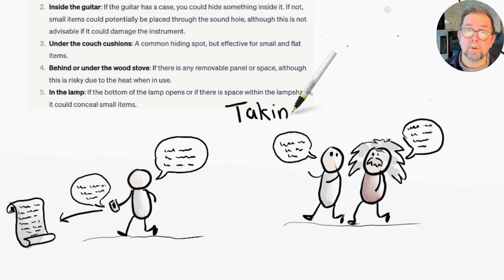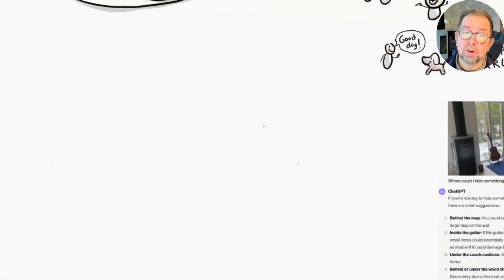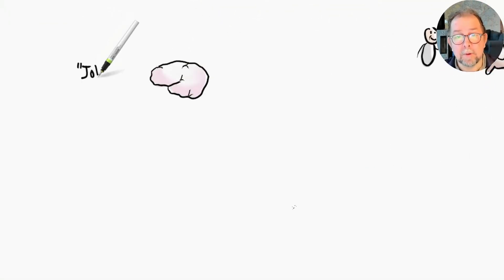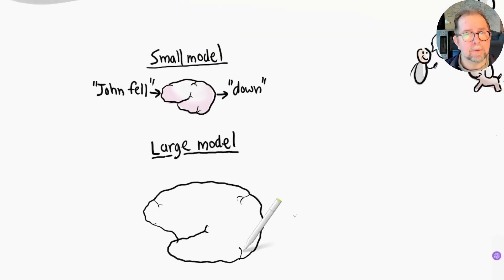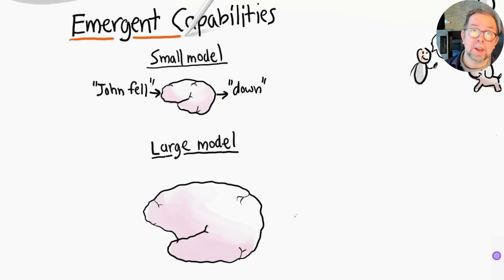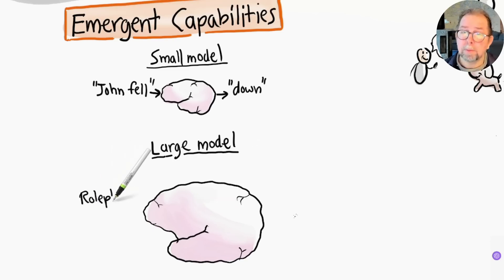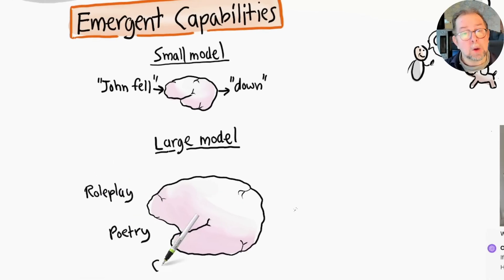Initially, language models were just word predictors - statistical machines with limited practical use. But as they became larger and were trained on more data, they started gaining emergent capabilities - unexpected capabilities that surprised even the developers of the technology. They could roleplay, write poetry, write high-quality code, discuss company strategy, provide legal and medical advice, coach, teach.